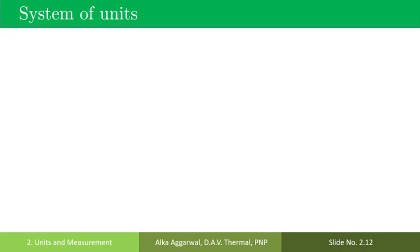A system of units is the complete set of units, both fundamental and derived, for all kinds of physical quantities. Each system is named in terms of fundamental units on which it is based. The common systems of units used are given below.